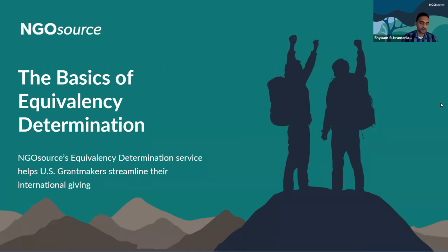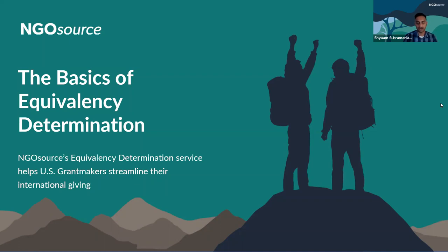Thanks a lot for joining us today. My name is Sean Subramanian, and I'm Senior Counsel with NGO Source. NGO Source is a project of Council on Foundations and TechSoup, and our aim is to improve the efficiency of international grantmaking and hopefully inspire an increase in international giving. We provide a service called Equivalency Determination. NGO Source has issued over 23,000 equivalency determinations on 8,000 unique organizations in 165 countries on behalf of over 600 grantmakers.